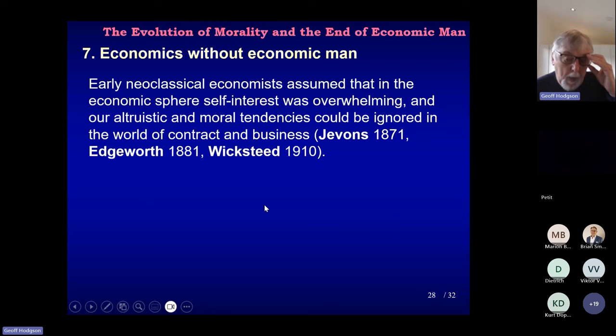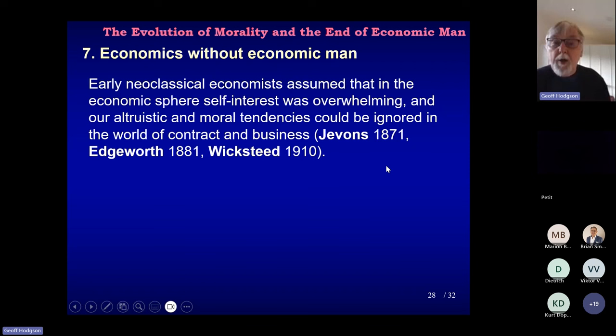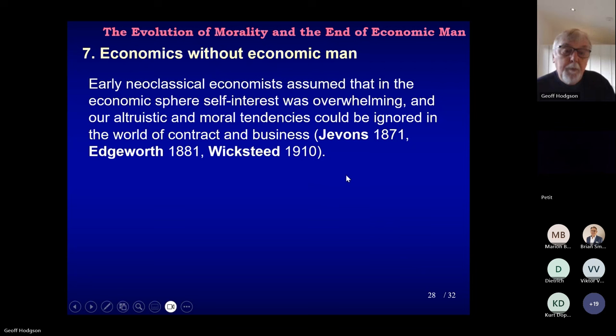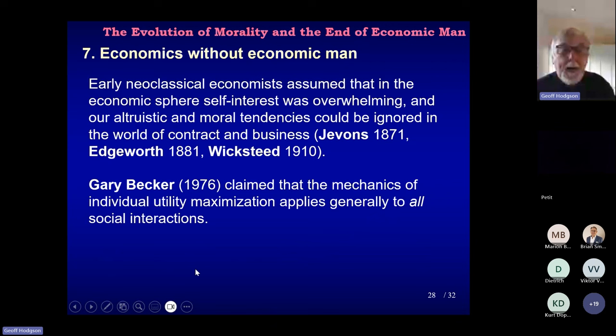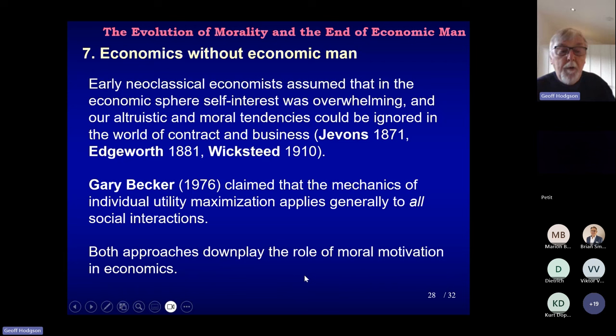So, final remarks. What would an economics without economic man look like and where would we get the ideas from? Early neoclassical economists assumed that in the economic sphere, self-interest was overwhelming and our altruistic content could be ignored in the world of contract and business. That's unlike later neoclassical economists who said we can assume utility maximisation everywhere, particularly on the basis of self-regarding preferences, including in the family. Becker goes further, claiming the mechanics of all individual maximisation applies generally to all social interactions. Both approaches, however, don't play the role of moral motivation in economics other than a simple utilitarian view.